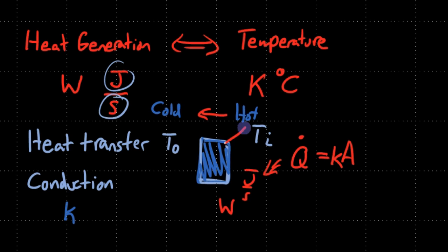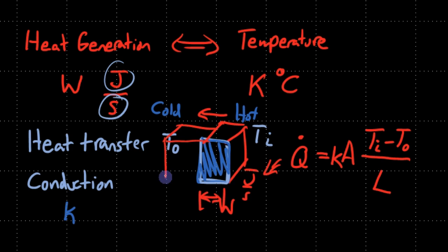It's times the temperature hot, which is going to be the inside temperature, minus the temperature cold, which is going to be the outside temperature, divided by the length. So the length is just this distance here. If you make this thicker and thicker, like a thicker jacket, it's going to reduce the amount of heat which is flowing, which makes sense.